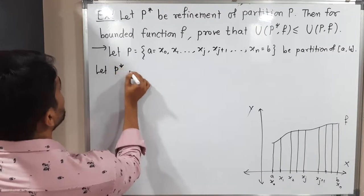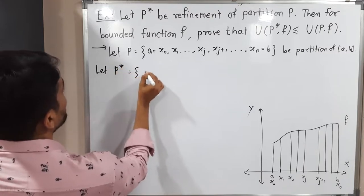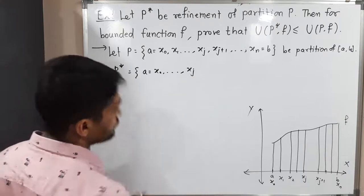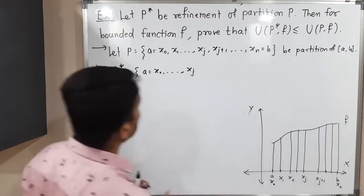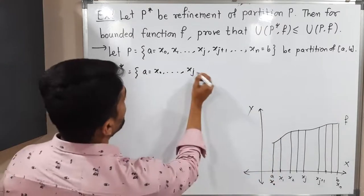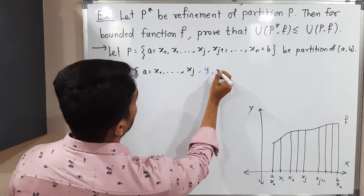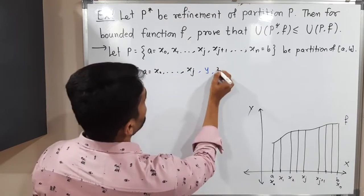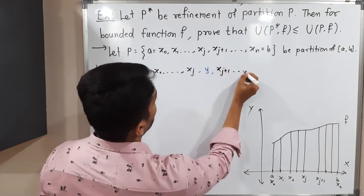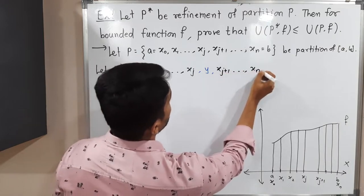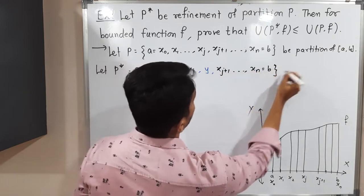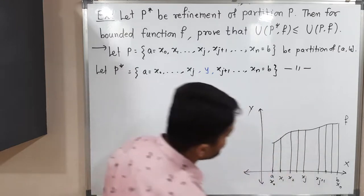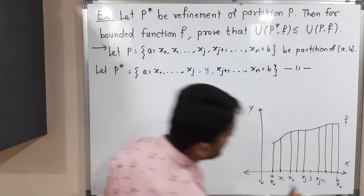Let P* = {a = X₀, ..., Xⱼ, Y, Xⱼ₊₁, ..., Xₙ = b} be a partition of closed interval [a, b]. All points are the same; I am simply adding one point Y between Xⱼ and Xⱼ₊₁. In the diagram, we have the extra point Y here, so because of that additional point, one more sub-interval will be added.